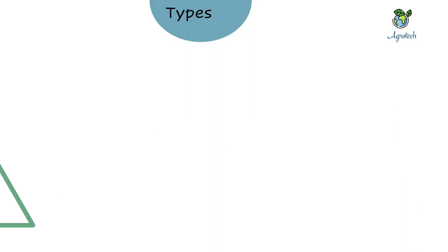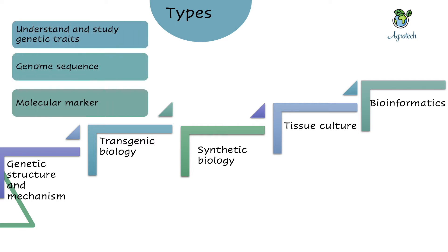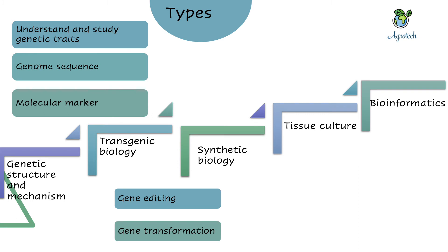Based on my understanding, I would like to divide plant biotechnology into five types. First is genetic structure and mechanism, which is based on understanding and studying genetic traits, genome sequences, developing molecular markers, understanding plant diversity, and developing gene pools. The second type is transgenic biology, where gene editing, gene transformation, and other editing tools are used to make transgenic or genetically modified crops.